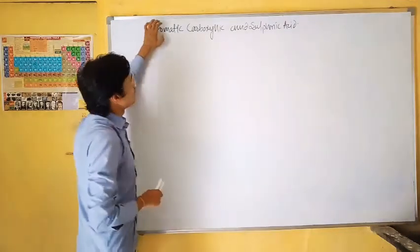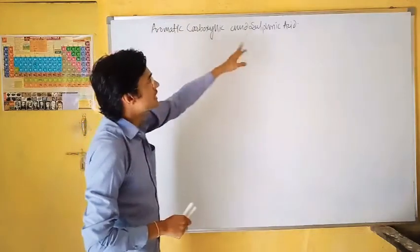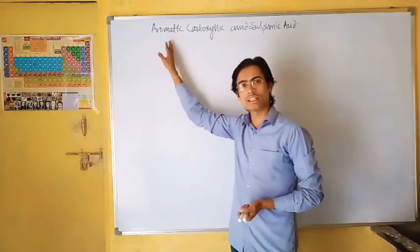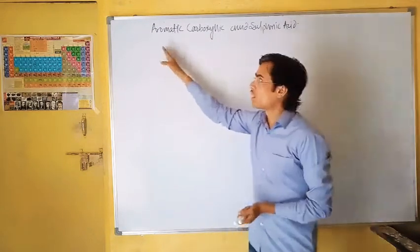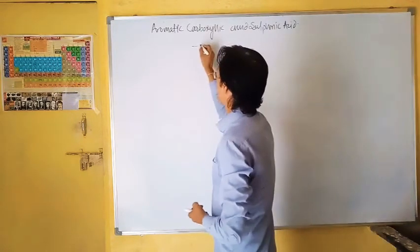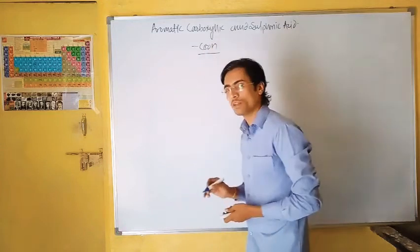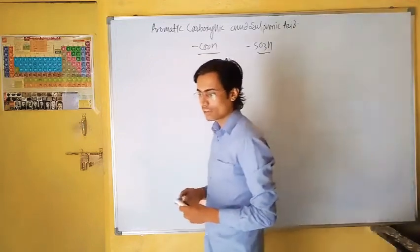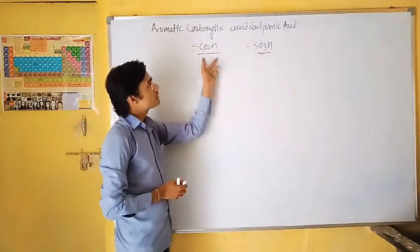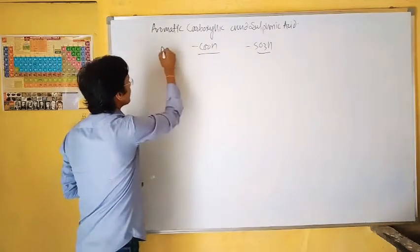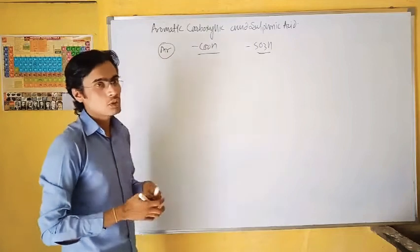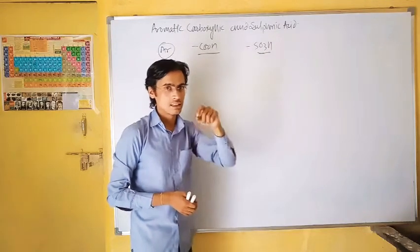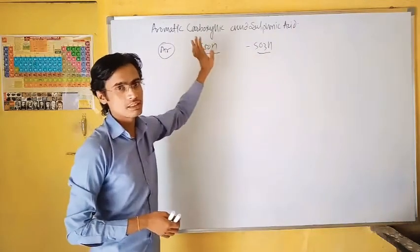Let's begin with the topic that is aromatic carboxylic and sulfonic acid. The name itself reveals that it is a compound which contains an aromatic ring. Carboxylic is a functional group which is -COOH. Sulfonic is -RSO3H. This kind of functional group is introduced. So that's why these compounds are formed from this kind of functional group along with an aromatic ring. So there are two types of acids — aromatic carboxylic acids and aromatic sulfonic acids — that are studied under this topic of BSc 2nd year.